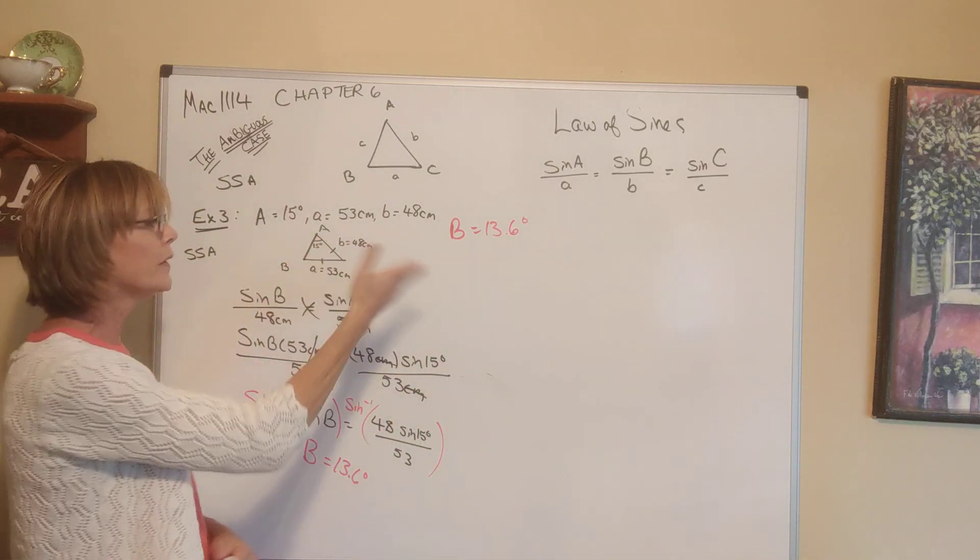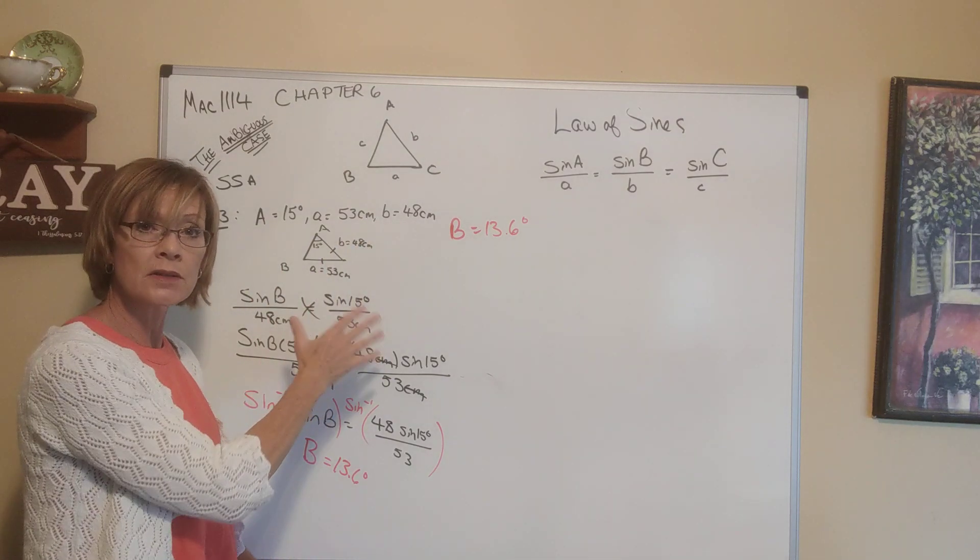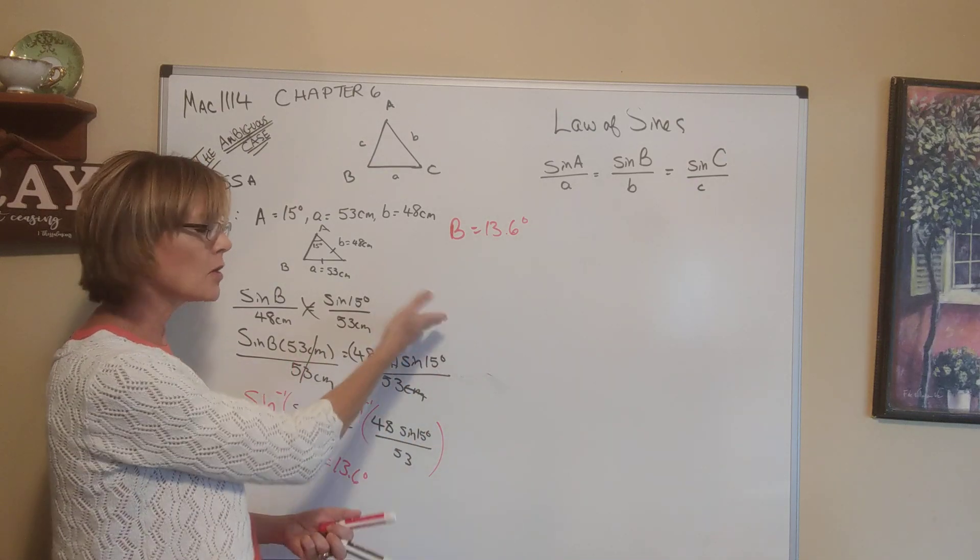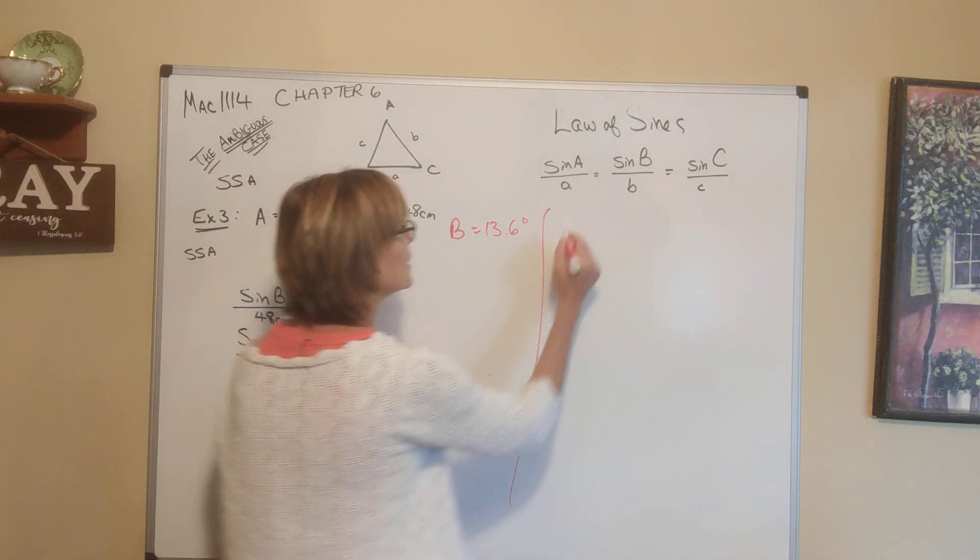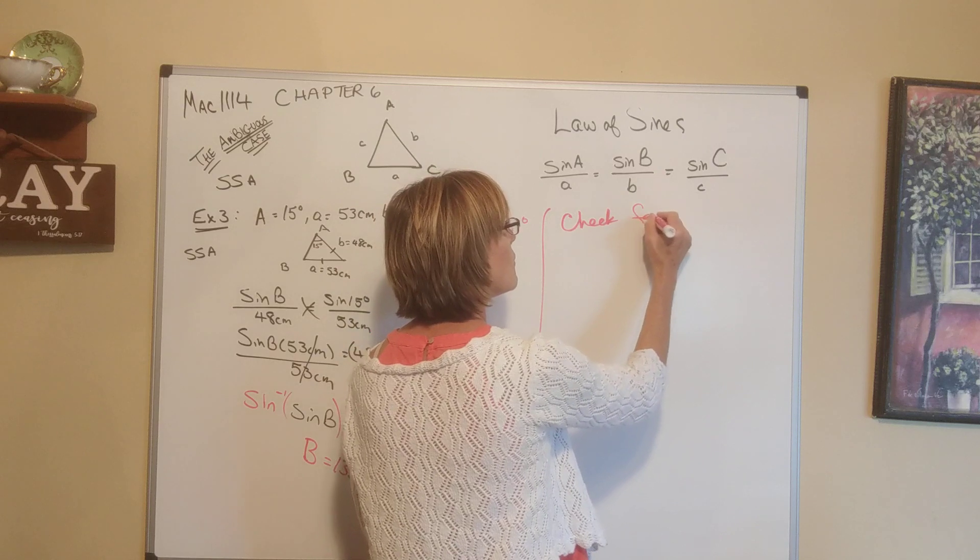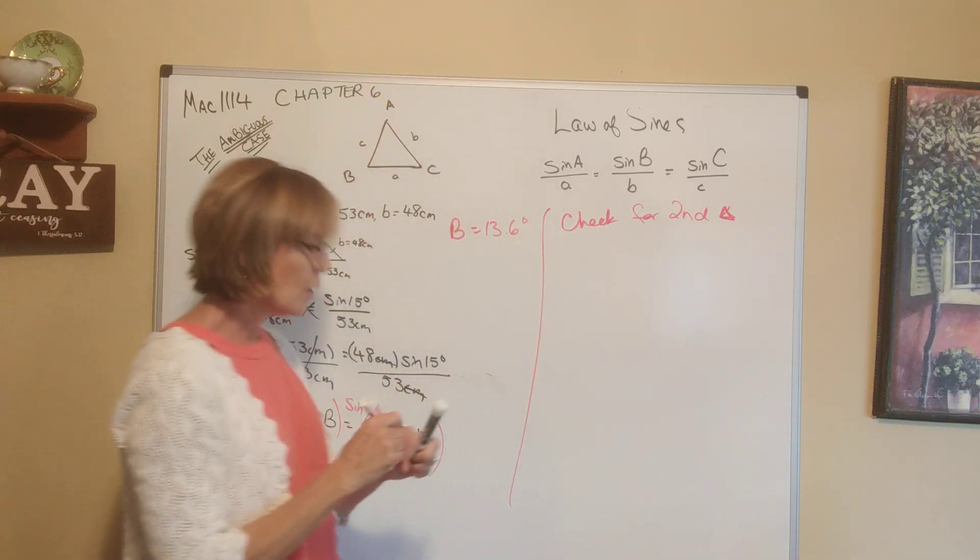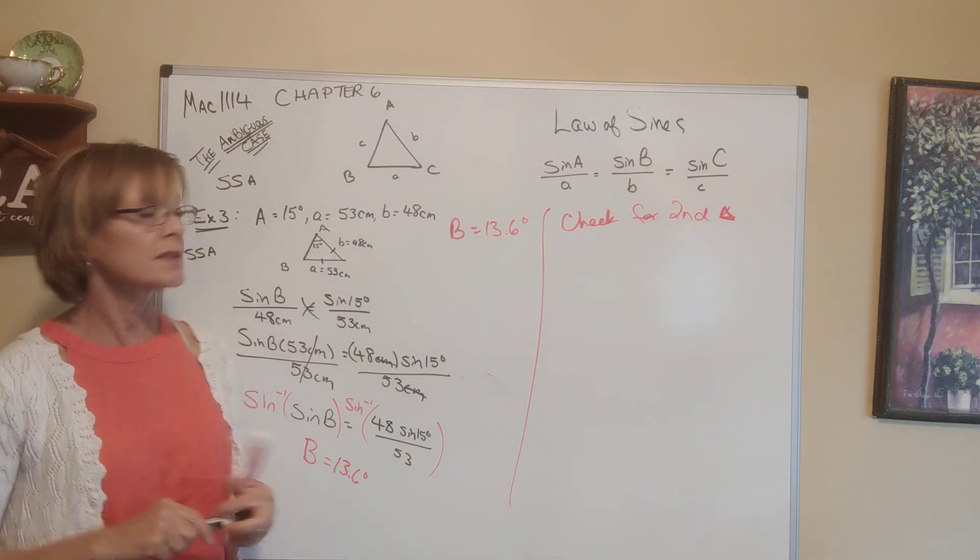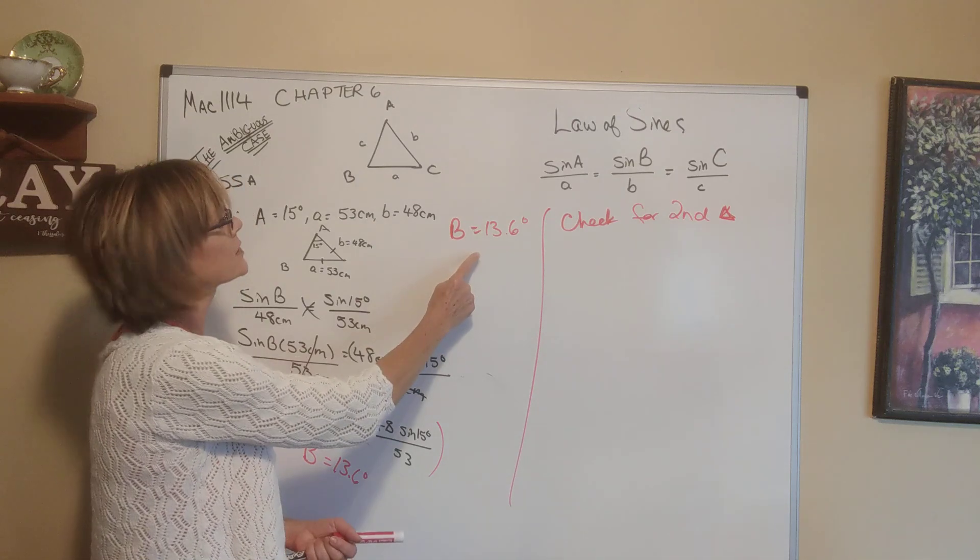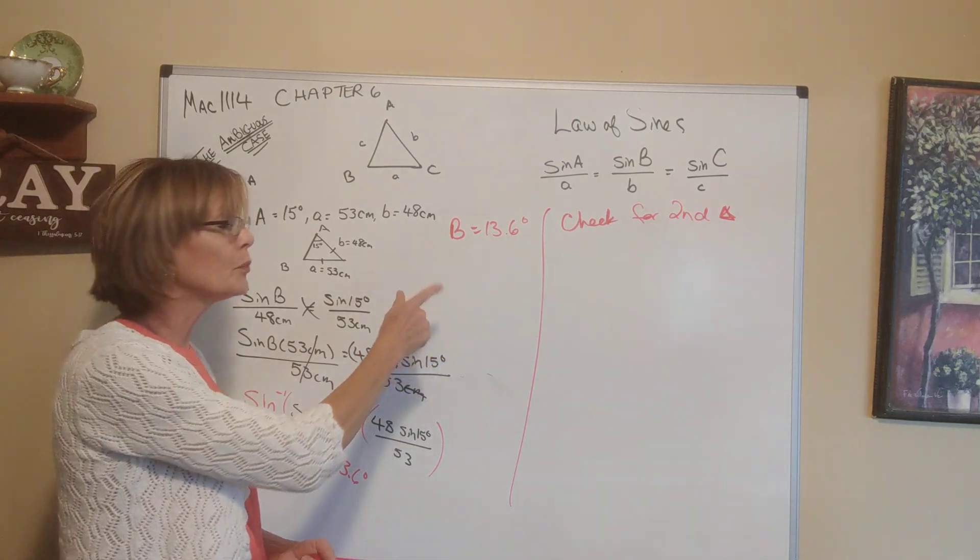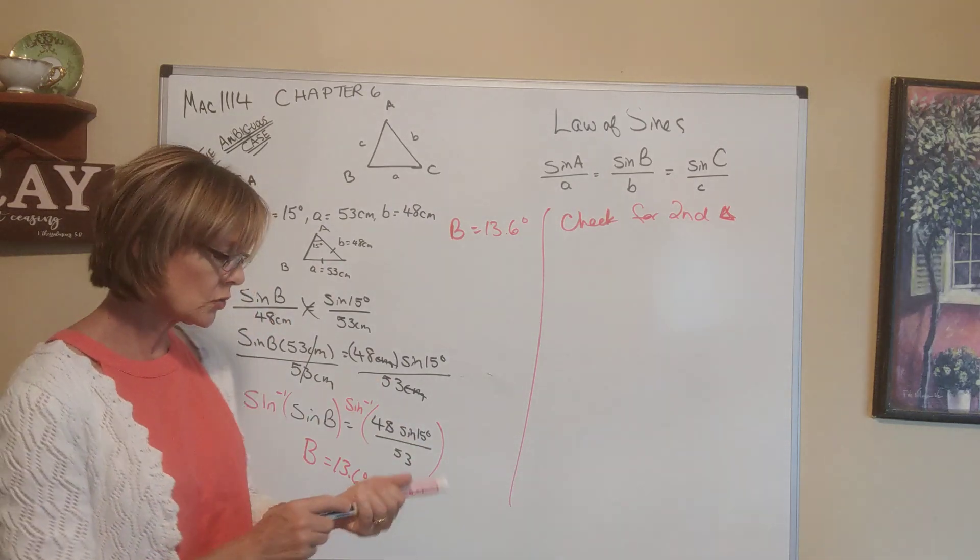All right, so angle b is 13.6 degrees. Now with this information, we can finish solving this triangle, and we should finish solving this triangle, but I'm putting a pause on finish solving this because the big deal here is, that's old news. The big deal here is, is there a second triangle? This is how you check for second triangle. What you do is, if a second triangle exists, the given information is the same, but we could have an angle that's 13.6 degrees, or we could have an angle b that is its supplement, 180 degrees minus that.